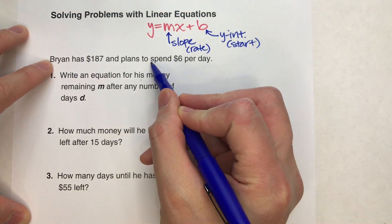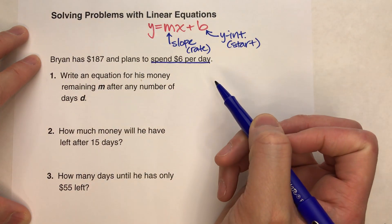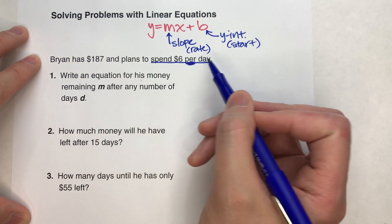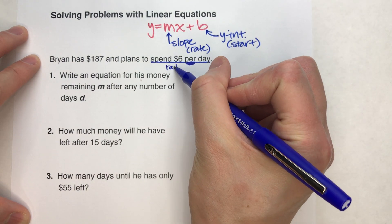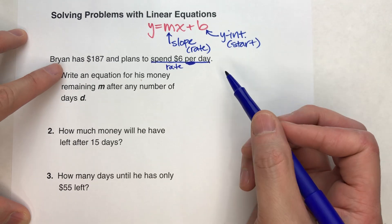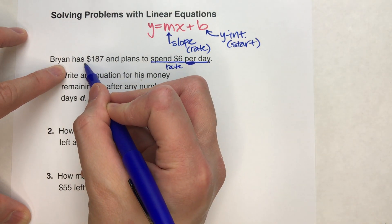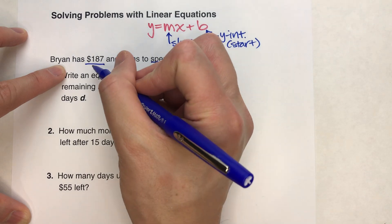If you notice here, it says he's spending $6 per day. Per is the key word there. So we know that's our rate, in other words our slope. And he's starting with $187. So that's our starting amount, so that's our y-intercept.